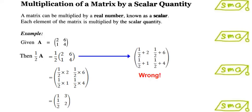Note that half times A is not an addition of half to each of the elements in the matrix. Writing it this way is wrong.